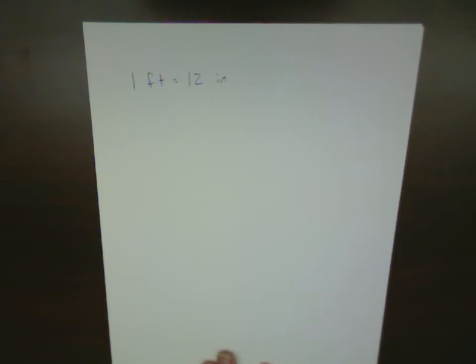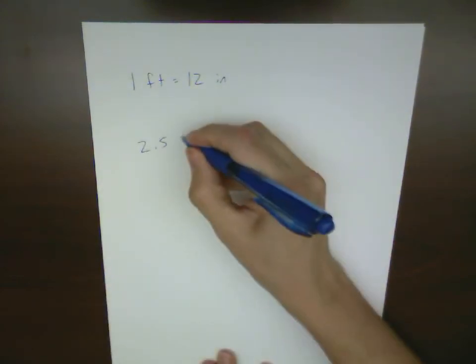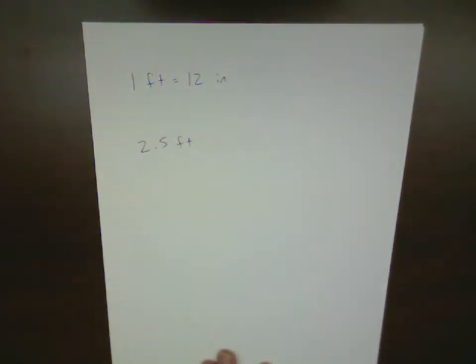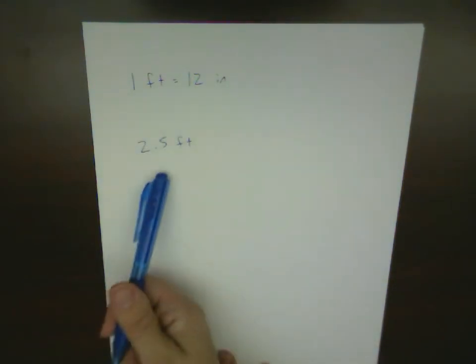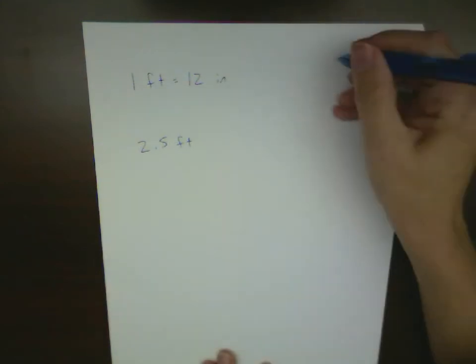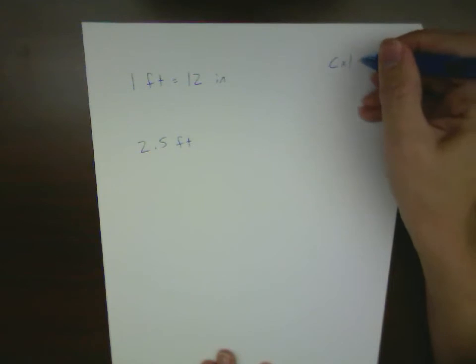Maybe we've got 2.5 feet, and for some reason we want that not in units of feet, but in units of inches. Well, we've got our factors A and B up here. This is like our factor C. So we want to take our factor C, multiply it by 1, so that we get something very similar to it.